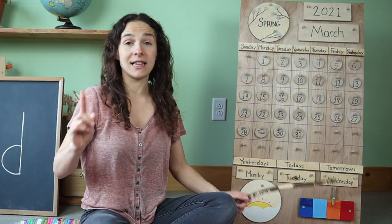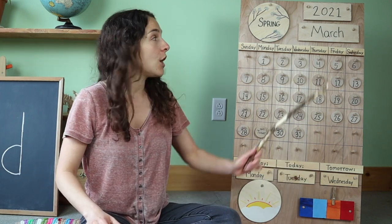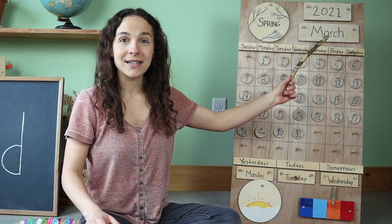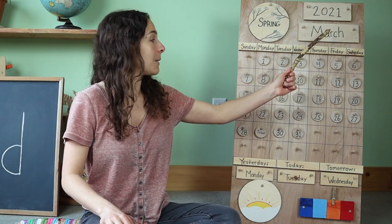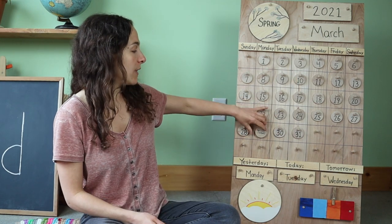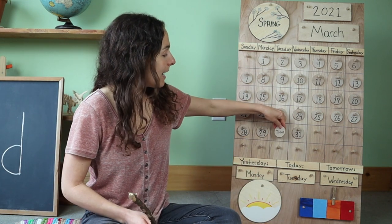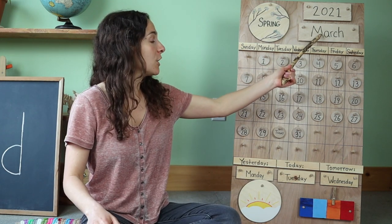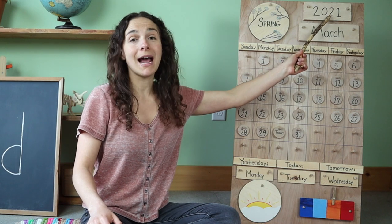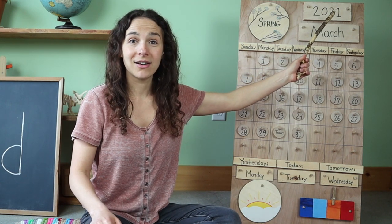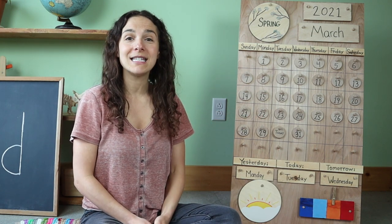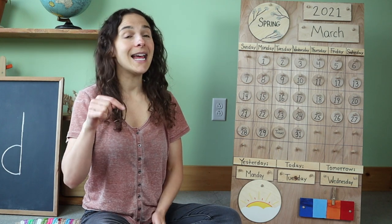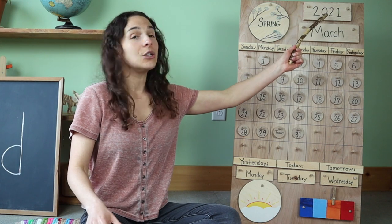I hope that you all are having a wonderful day so far. Let's jump right into circle time. The first thing we need to do is begin with the date — we start off with the month right up here. Do you know what the month is? March. That's right, friends. The month is March, and today is March 30th. So let's move the chip over from the number 29 — that was yesterday. And right up here we have the year: 2021. Today is March 30th, 2021.